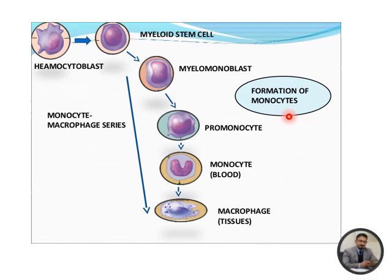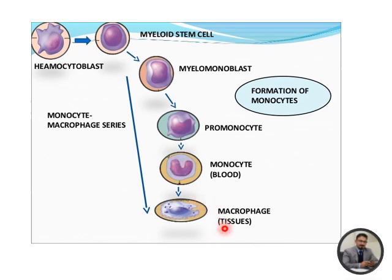This is the formation of monocytes, known as monocytopoiesis. Just as granulopoiesis has six stages, monocytopoiesis also has its stages. Here we have the same hemocytoblast, then the myeloid stem cell — remember that monocytes are formed from the myeloid stem cell. Then this becomes a monoblast, which matures into a promonocyte, and then into a mature monocyte. When the monocyte goes to connective tissue, it becomes a macrophage.